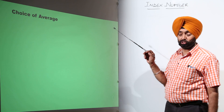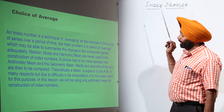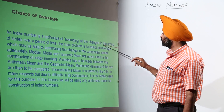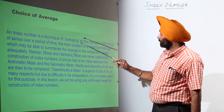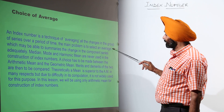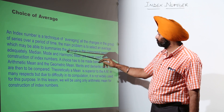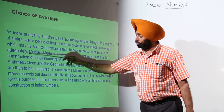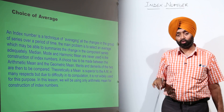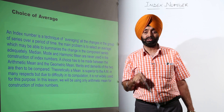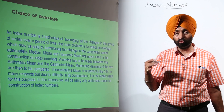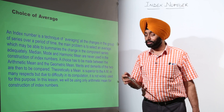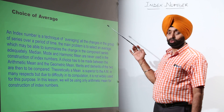Next is the choice of average. An index number is a technique of averaging all the changes in a group of series over a period of time. The main problem is to select an average which may be able to summarize the change in the component series adequately. We have already discussed this in the characteristics part — what formula we are going to use — that is what we have mentioned here: choice of the average.